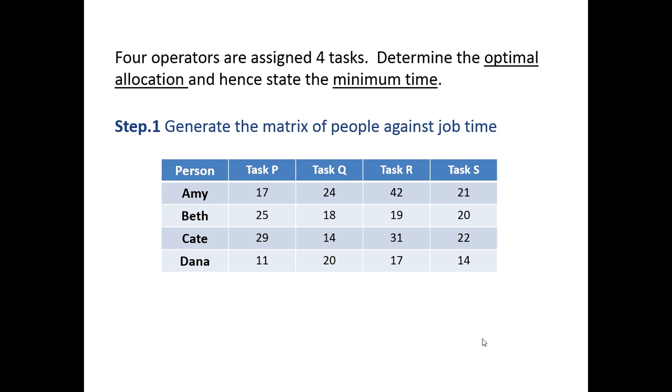Welcome to this tutorial video. In this video we'll be looking at the allocation problem using the Hungarian algorithm. All allocation problems are simply trying to find the best combination of people to tasks in the minimum time available.